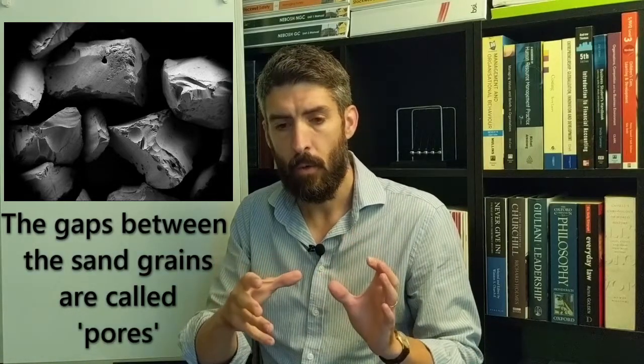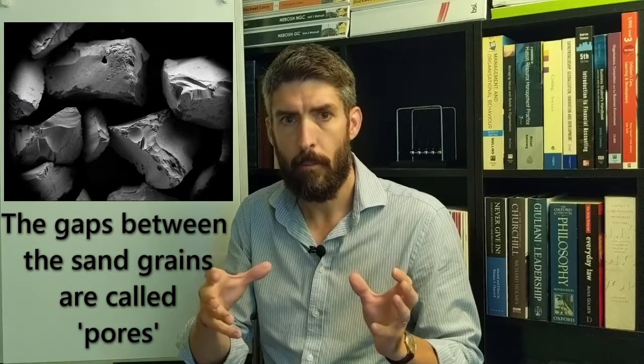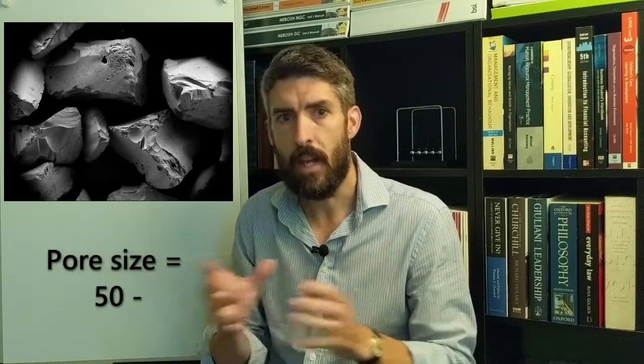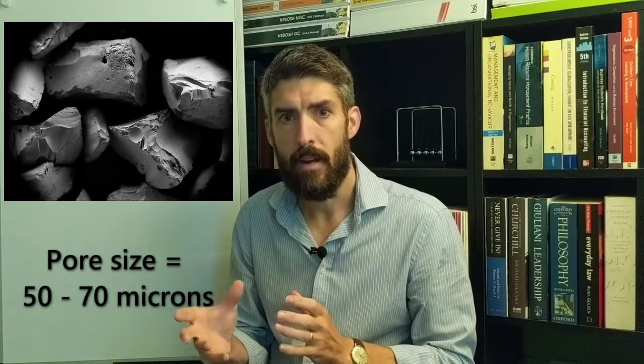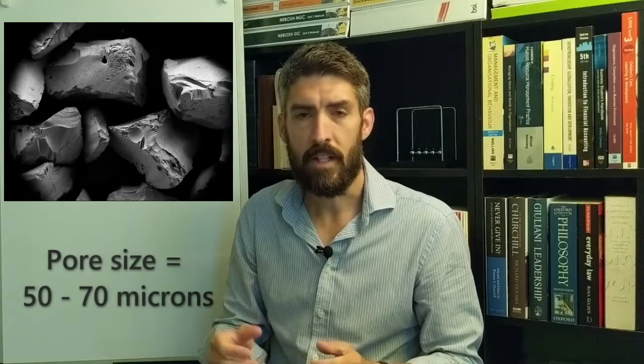In a typical commercial swimming pool filter, the gaps that get created, the pores, are going to be in the region of 50 to 70 microns in width. A micron is a thousandth of a millimeter, so we're talking about between 50 and 70 thousandths of a millimeter.